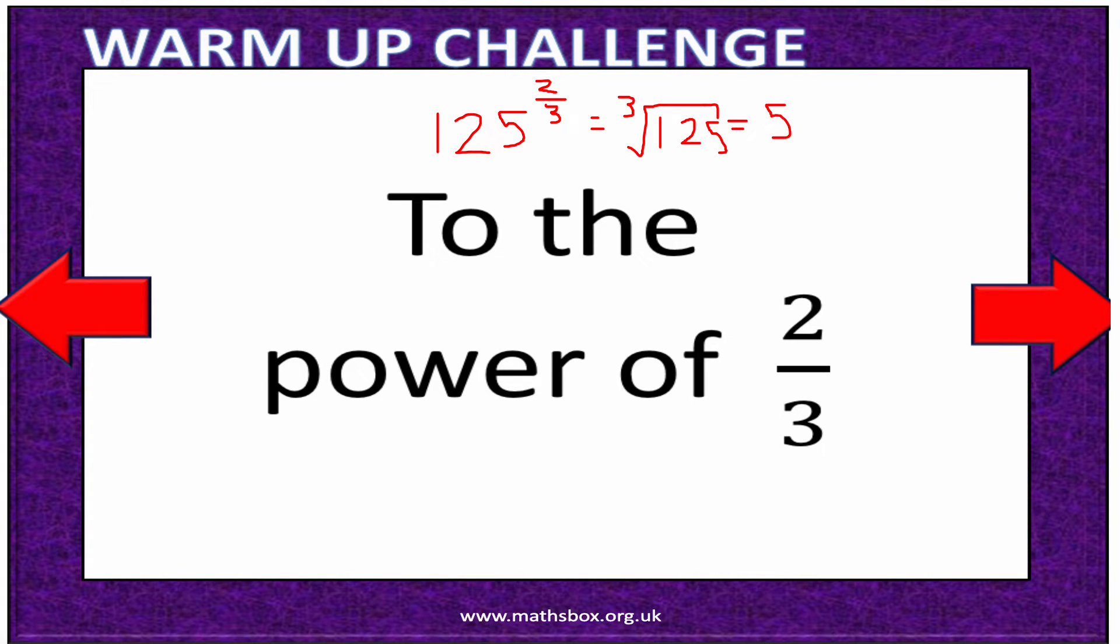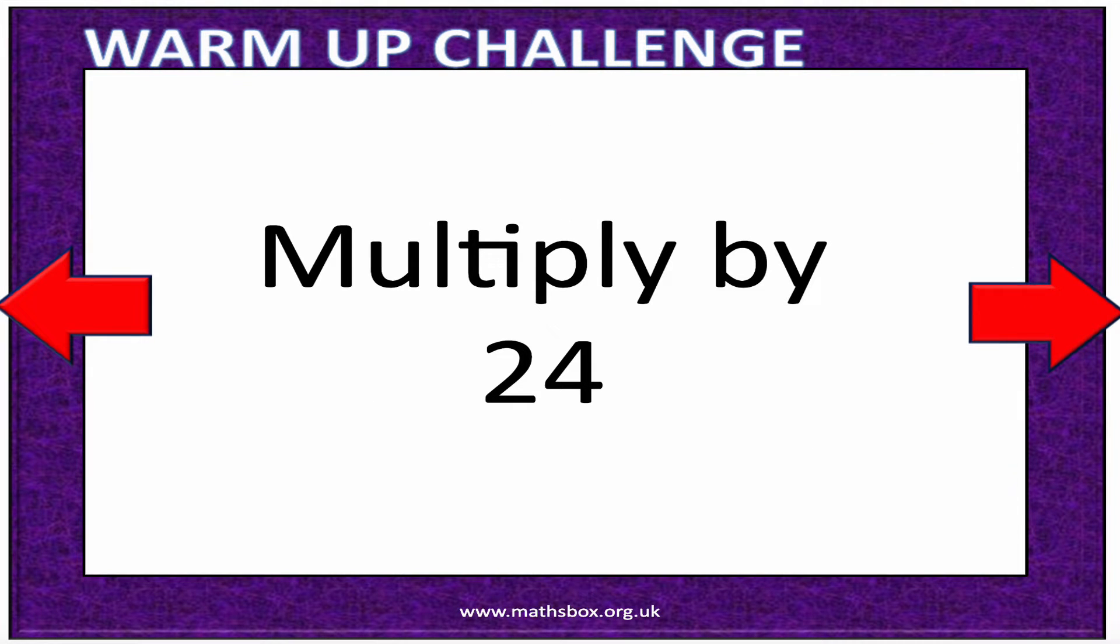I'm going to raise my answer to the power of the numerator, so 5 squared. The numerator is just like a normal power, a normal exponent. 5 times 5 is 25, so that's my answer for the first part.